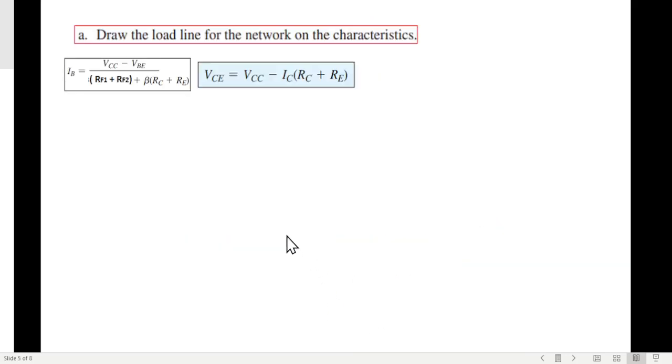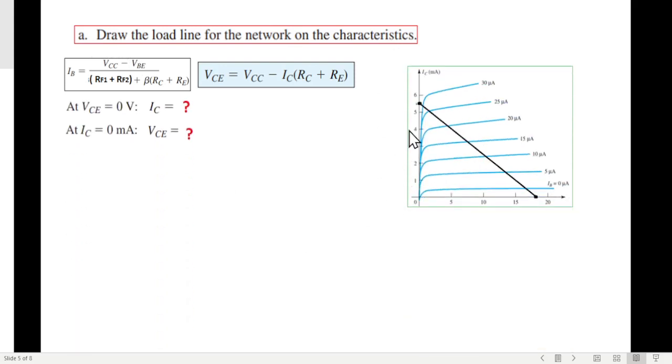Now let's come to the question. Part A says draw the load line for the network on the characteristics curve. This was our characteristics curve, and we had discussed earlier also that the load line is connecting a point in the IC and another point in VCE. And for that we'll use this equation. At one time we'll put VCE equal to 0 and find the value of IC when VCE is 0. That means we are here. We find the value of IC. In the other case when IC is 0, so we are here, and then we find the value of VCE.